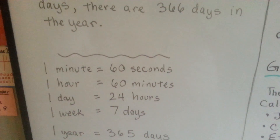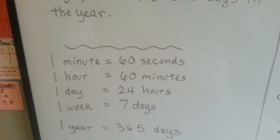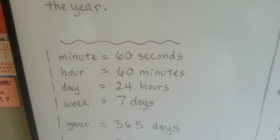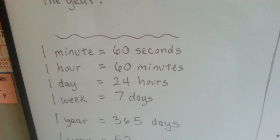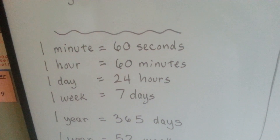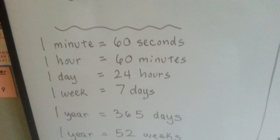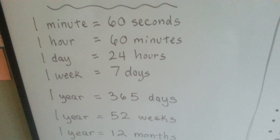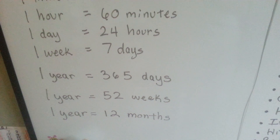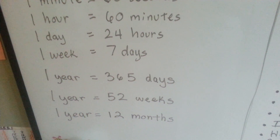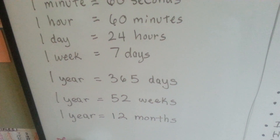To review what we covered in the last couple of videos: a minute has 60 seconds, an hour has 60 minutes, one day is 24 hours, one week is 7 days, one year is 365 days when it's not a leap year — and that's 52 weeks or 12 months.